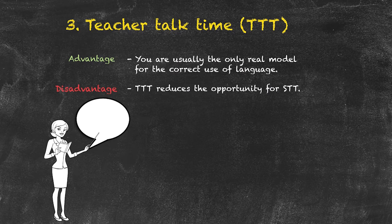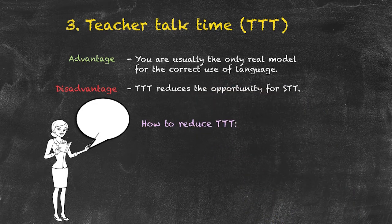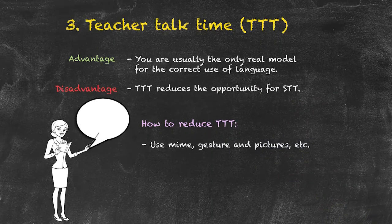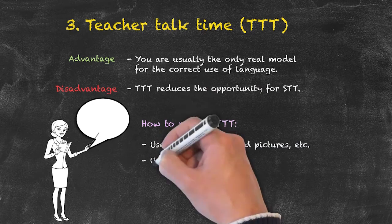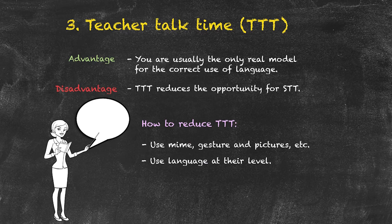How can we do that? Well, there are a number of simple ideas. We've already looked at the idea of using mime and gestures, and here we could include pictures. Secondly, we need to make sure that we're only using language that's at their level. For a low-level group, it means that the language available to us as the teacher is going to be quite limited. That limited language will in itself reduce teacher talk time.